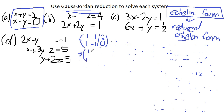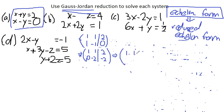So 1 minus 1 gives me 0. Minus 1 plus minus 1 gives me minus 2. Minus 2 plus 0 gives me minus 2. So we now have [1, 1 | 2; 0, -2 | -2]. The first row still has leading entry 1, and for row 2 we divide by minus 2: minus 2 divided by minus 2 gives 1, and minus 2 divided by minus 2 gives 1. Row 2 becomes [0, 1 | 1].